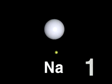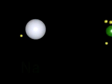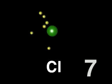A sodium atom has one valence electron, with a stable energy level below containing eight electrons. A chlorine atom has seven valence electrons.